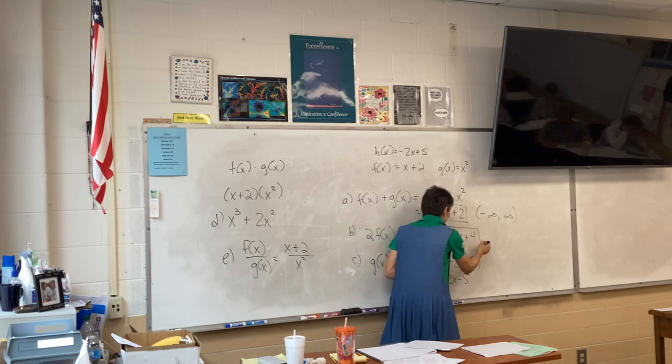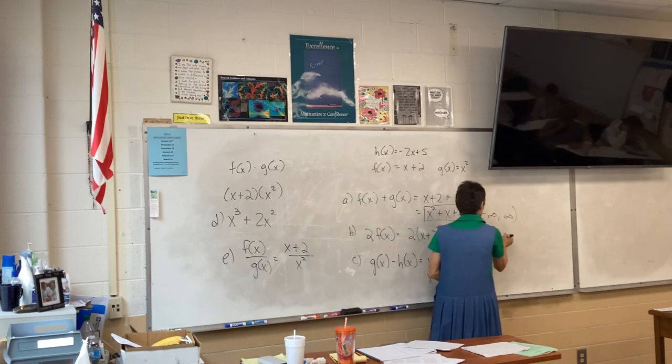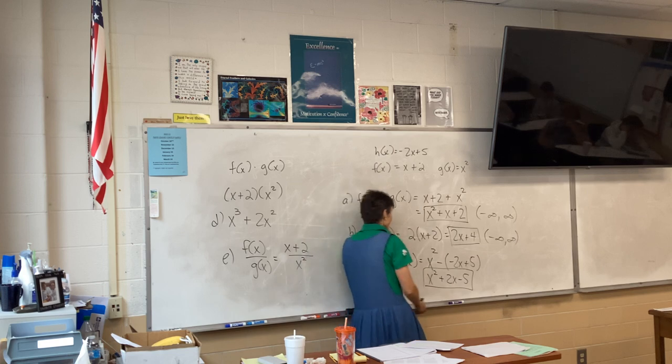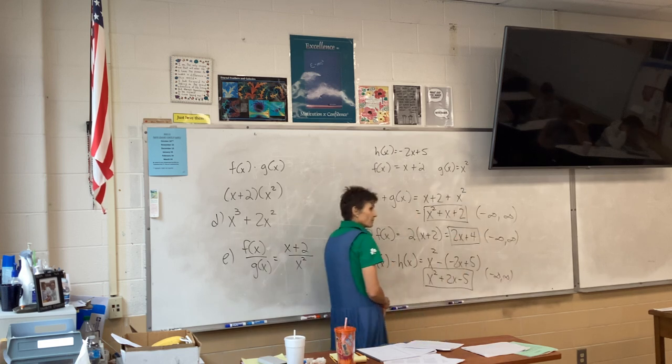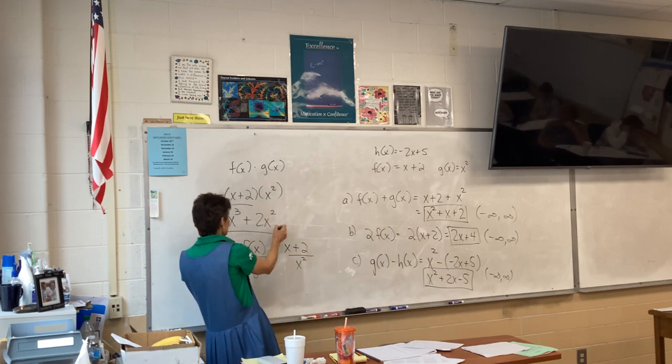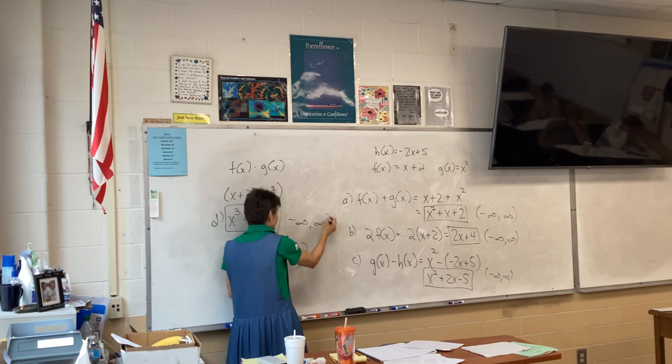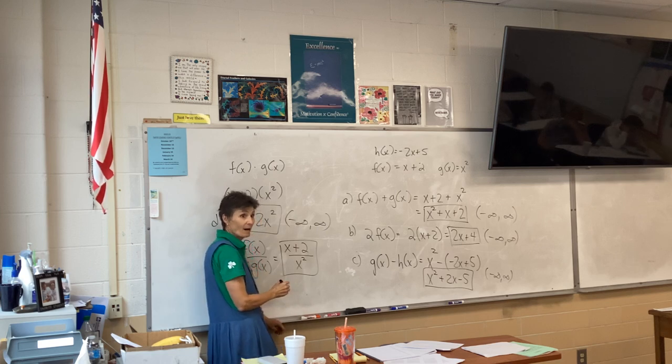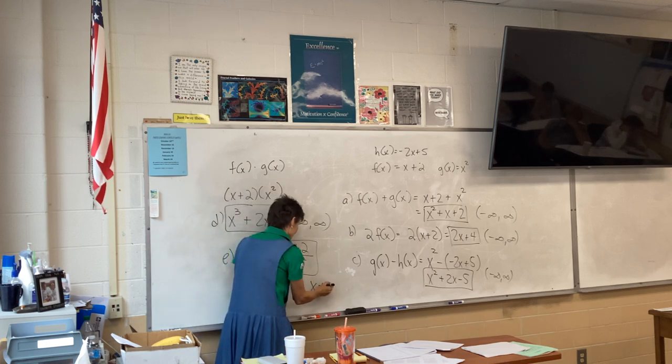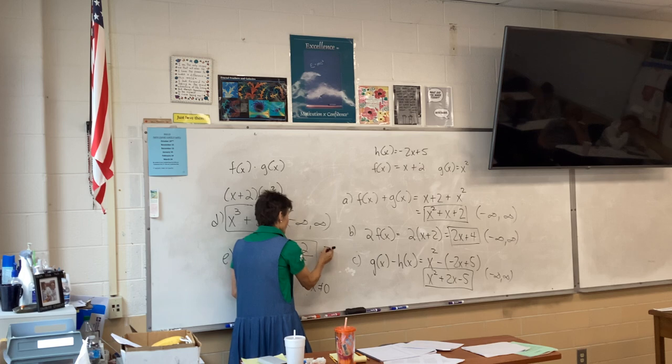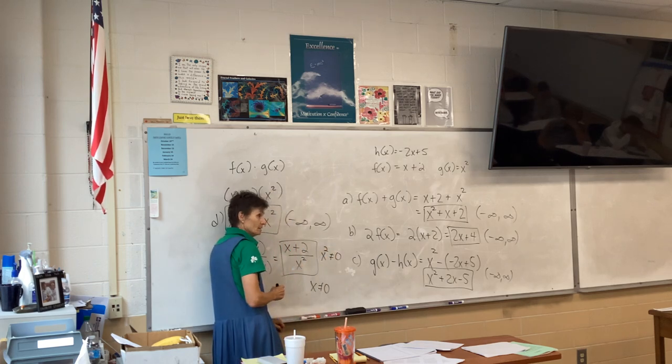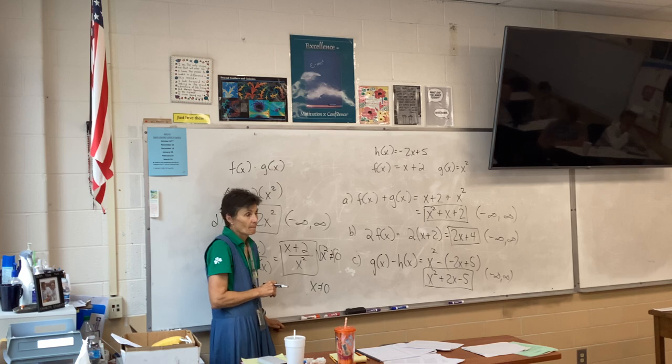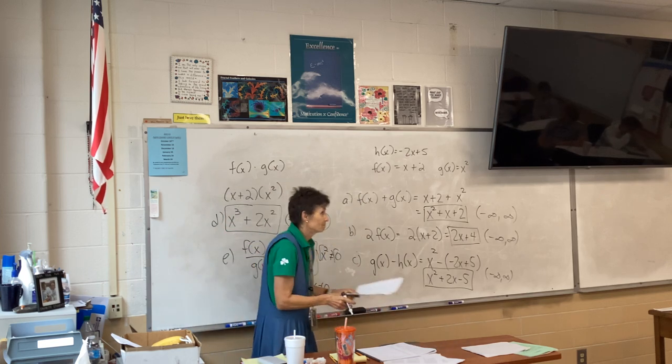Here's the answer we got to C. All reals. We're getting boring here. All reals. Here's the answer we got to D. All reals. Here's the answer we got to E. Not all reals. X cannot be zero. Remember, x squared cannot be, the denominator cannot be zero. So x can't be the square root of zero, which is zero.